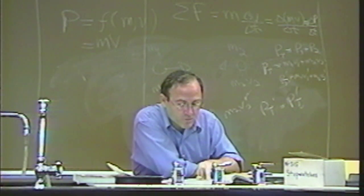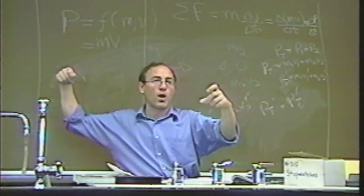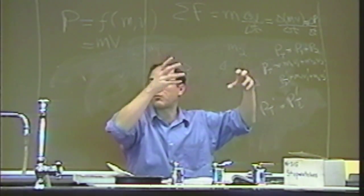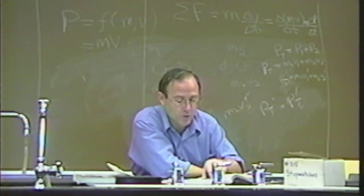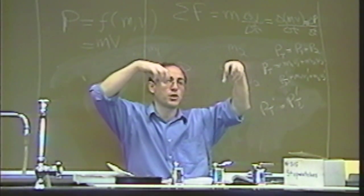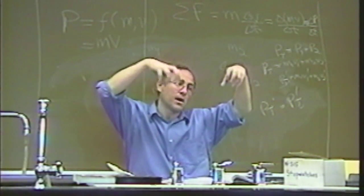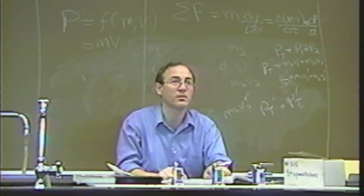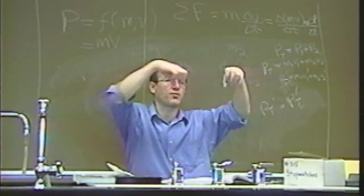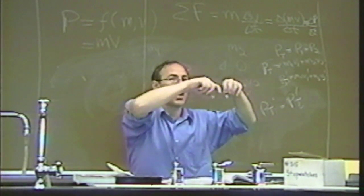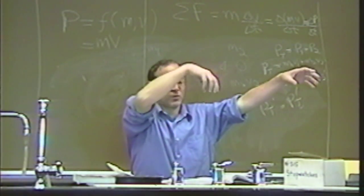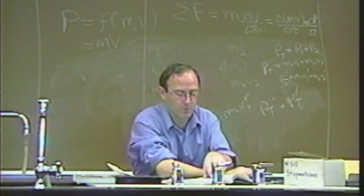A billiard ball of mass M moving with speed V collides head-on. What are the speeds of the two balls after the collision? One is stationary and is being hit by the other. So one has an initial velocity of zero, one has an initial velocity of V. The total initial momentum is the momentum of the moving one plus the stationary one. The stationary one has zero momentum, so the total momentum on the left-hand side is MV. The total momentum after the collision is M1 V1 prime plus M2 V2 prime. Since both are billiard balls, the masses are the same, so we can cancel M.